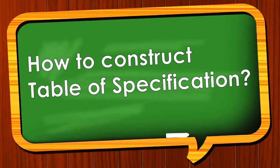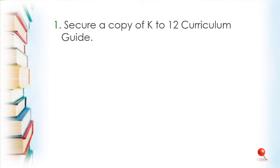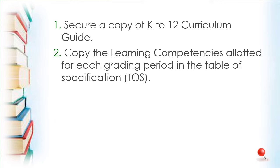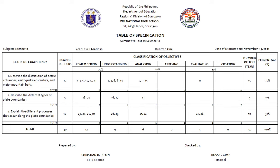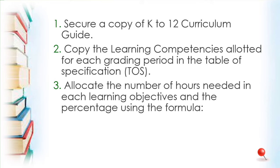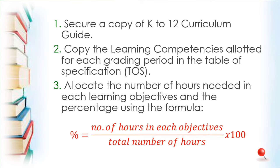How to construct a Table of Specification? First, secure a copy of the K-12 curriculum guide and copy the learning competencies allotted for each grading period in the table of specification. This is the TOS I made for my Grade 10 Science class — here are the learning competencies I covered for Quarter 1. Third, allocate the number of hours needed for each learning objective and the percentage using the formula: percent equals number of hours in each objective divided by the total number of hours, times 100.